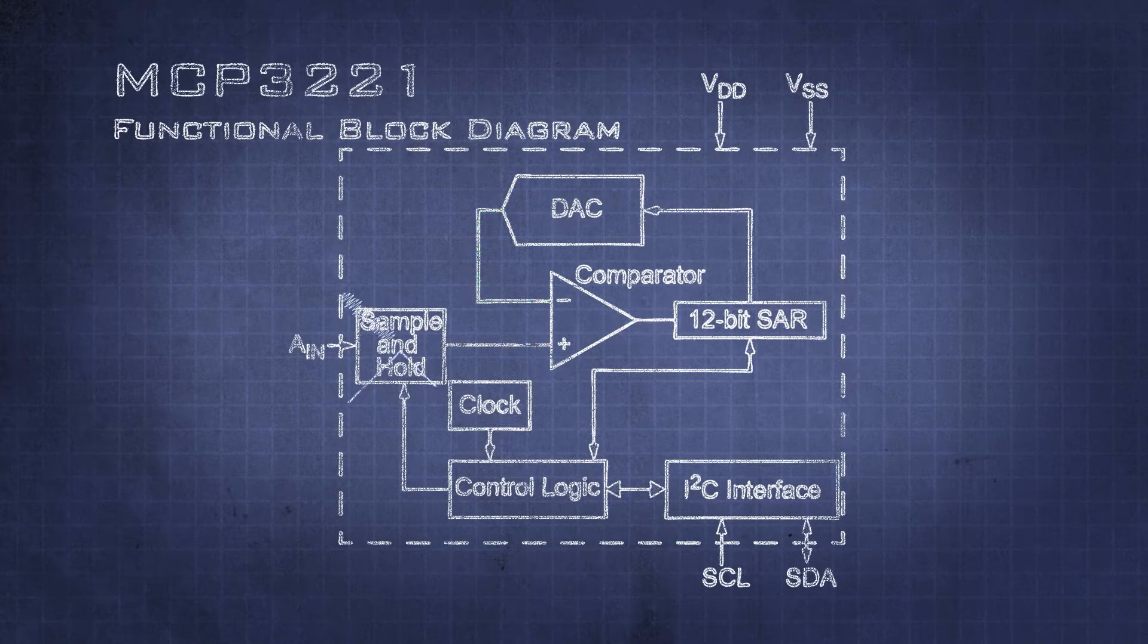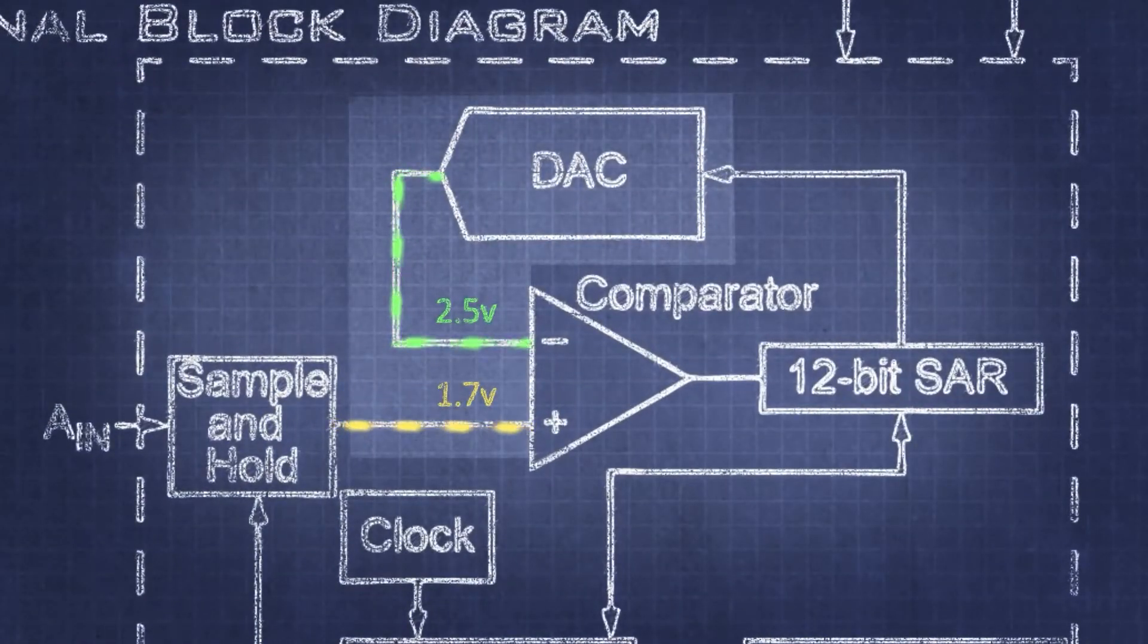To keep the scope of this tutorial down we will skip the sample and hold portions as they are a bit difficult to build on breadboards given all the leakage and parasitics present. Starting from the core of the ADC, the DAC generates a voltage that we use as a reference for comparing against the analog input voltage.